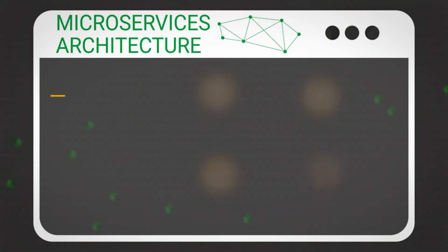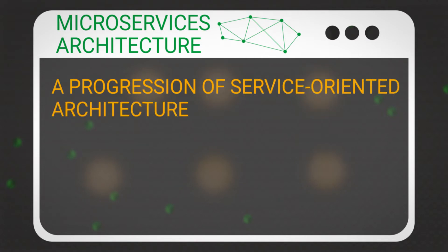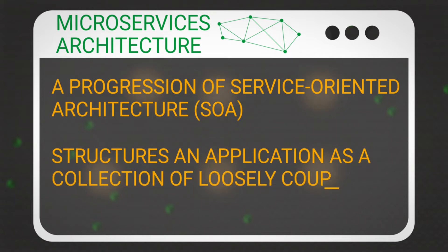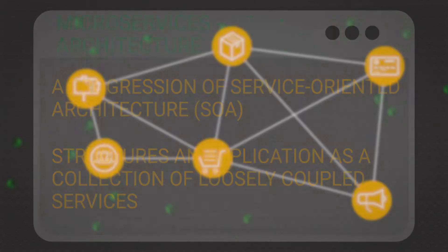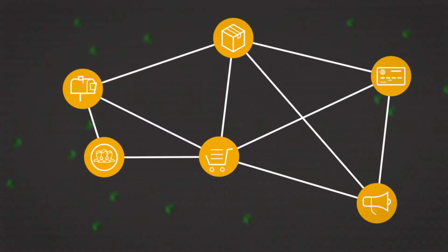Microservices architecture is a progression of service-oriented architecture, or SOA, which structures an application as a collection of loosely coupled services. Each of these services provides a unique need of the application.